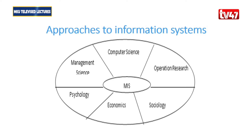This diagram shows us clearly how we can relate to information systems. Management science, computer science, and operations research form the technical field. We also have the behavioral field, which includes psychology, economics, and sociology. All these fields can be used to describe information systems. We cannot say computer science alone relates to information systems; we also have behavioral approaches.